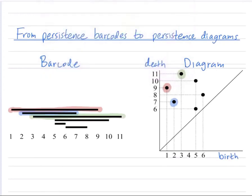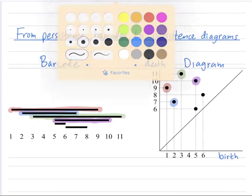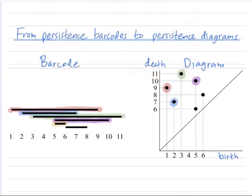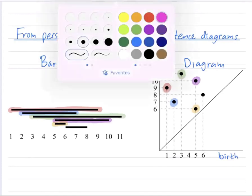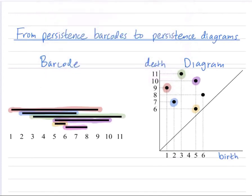And then I have a bar born at scale five that dies at scale ten. Only two more: bar born at scale five dies at scale six. And lastly, a bar born at scale six that dies at scale eight.